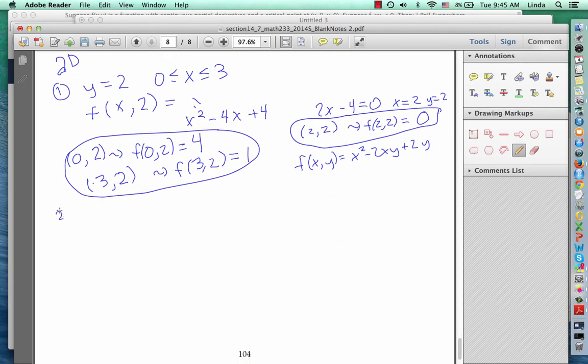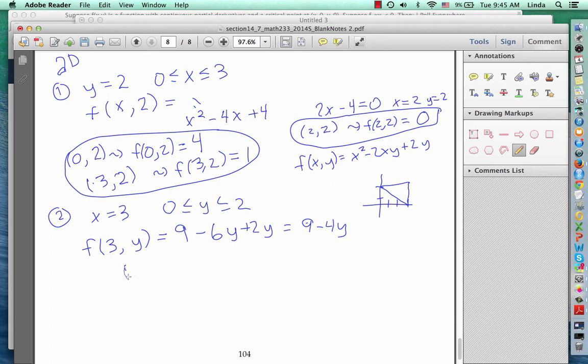Let's check the next piece of boundary, which is the right edge where x equals 3, and y is between 0 and 2. So now we're looking at f for points of the form 3y. When we plug that in, we get 9 minus 6y plus 2y, which is 9 minus 4y. Well, that linear function has its extreme values on its endpoints. So let's check those endpoints where x is 3 and y is 0. We have f of 3, 0 is equal to 9.